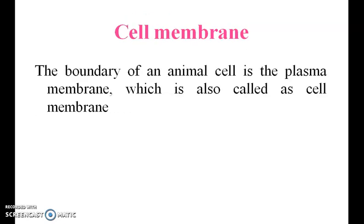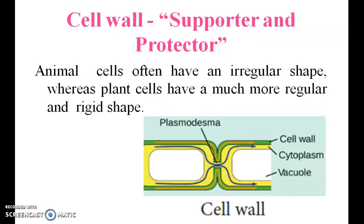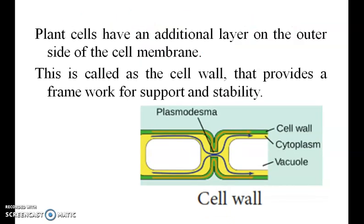Cell membrane: the boundary of an animal cell is the plasma membrane, also called the cell membrane. The cell wall acts as a supporter and protector. Animal cells often have an irregular shape, whereas plant cells have a much more regular and rigid shape. Plant cells have an additional layer on the outer side of the cell membrane.